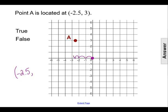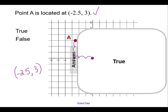Then point A is up one, two, three units. So we can use a positive three for our second number to represent that movement. So point A is located at negative two point five, three, which is what our statement told us in the first place. So that statement is then true.